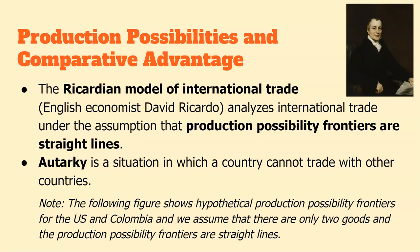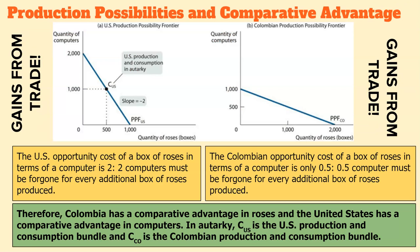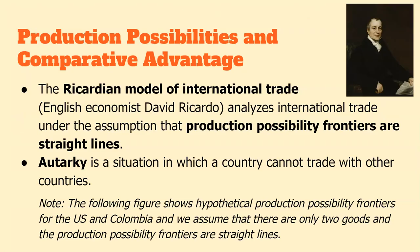The idea is: we're producing as much as we can and there's an opportunity cost. If we're producing more of good A, we're producing less of good B. Looking at this curve — a straight line between two goods the U.S. is producing, computers and roses — if they're just producing among themselves, that's autarky: not trading with anyone, just producing and selling within your own country. If you're producing more computers, you're producing fewer roses, and vice versa.